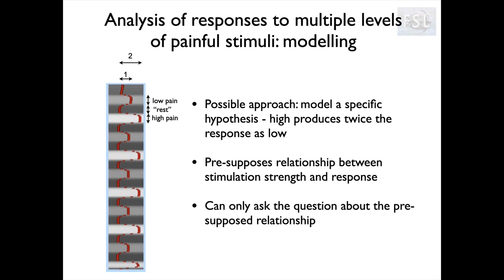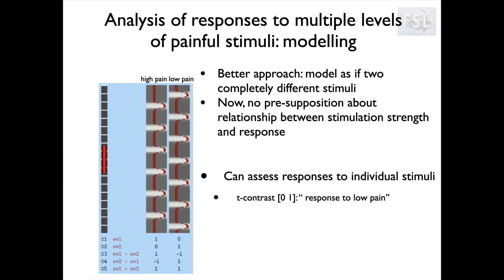That single-EV approach is not a good way because it makes a very strict assumption: that the MRI response to high pain will be exactly twice that of low pain. We don't know that's true — in fact it's extremely unlikely, given that we arbitrarily decide what's low and high, that MRI gives a non-linear measurement due to the BOLD effect, and that neuronal processing in the brain is very non-linear. So we don't want to presuppose that; instead we want something more flexible.